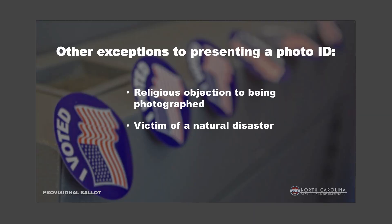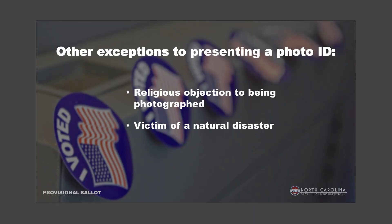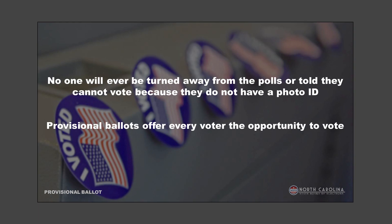Other exceptions to presenting a photo ID include religious objections to being photographed — the Amish are the main example. If someone comes in saying they don't take photos, they can still vote but fill out an exception form for religious reasons. Natural disasters — floods, hurricanes, tornadoes that destroy a neighborhood — are also an exception, and those are easy to verify since they're declared by the governor or president. The key point is that people will never be turned away from voting because of lack of a photo ID — they always have the fail-safe of voting provisionally and can show ID or fill out an exception form afterward.